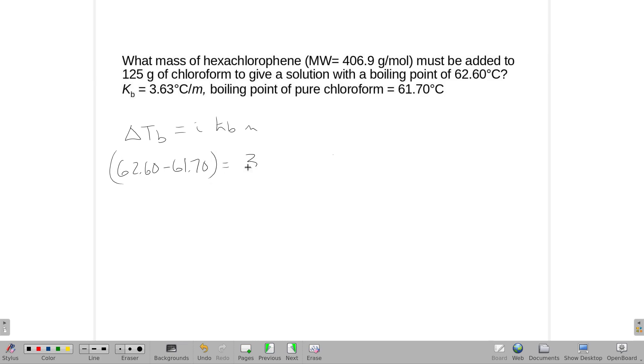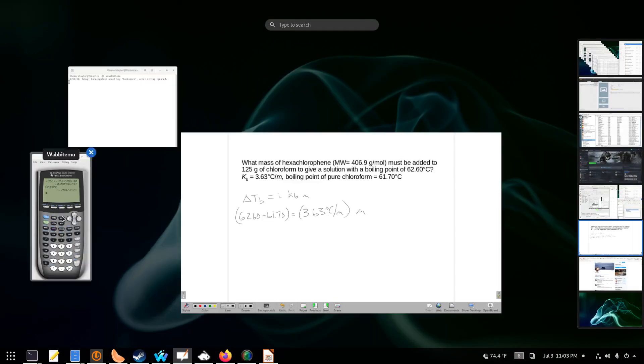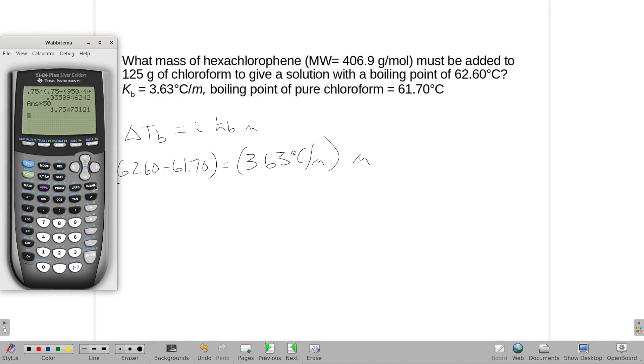And my Kb is 3.63 degrees Celsius per molality. Let's just start by solving for the molality. So, 62.6 minus 61.7 is 0.9. Divide that by 3.63.